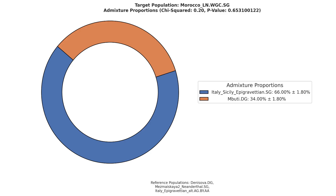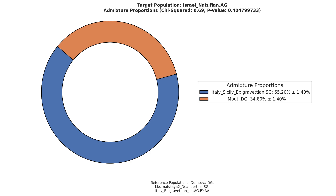Next, late Neolithic Moroccans have 34% Basal Eurasian admixture. Technically this also includes Ancestral North African admixture, since Ancestral North Africans also carry no Neanderthal ancestry. I haven't found a way to split Ancestral North African from Basal Eurasian in these models. Finally, Iberomaurusians seem to carry around half Basal Eurasian and Ancestral North African admixture.